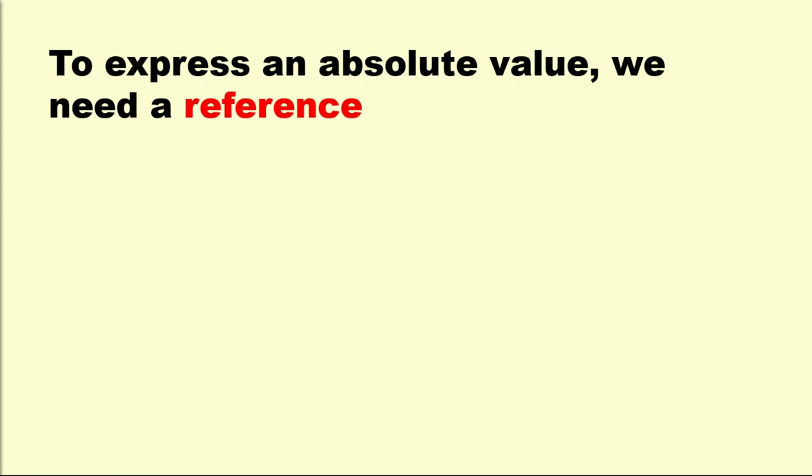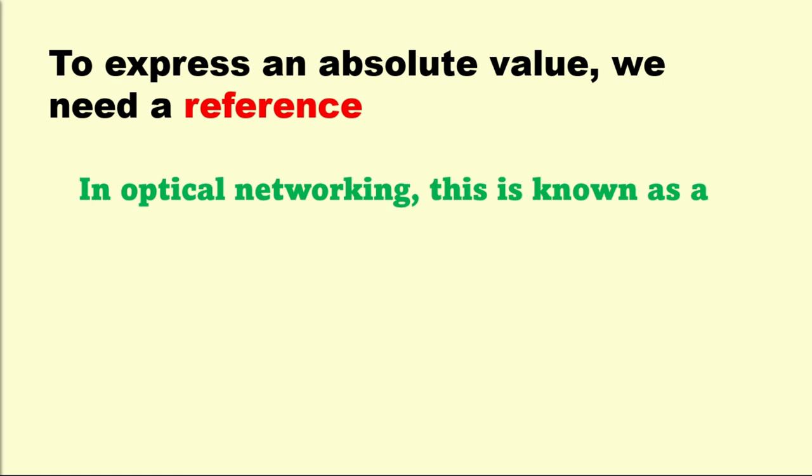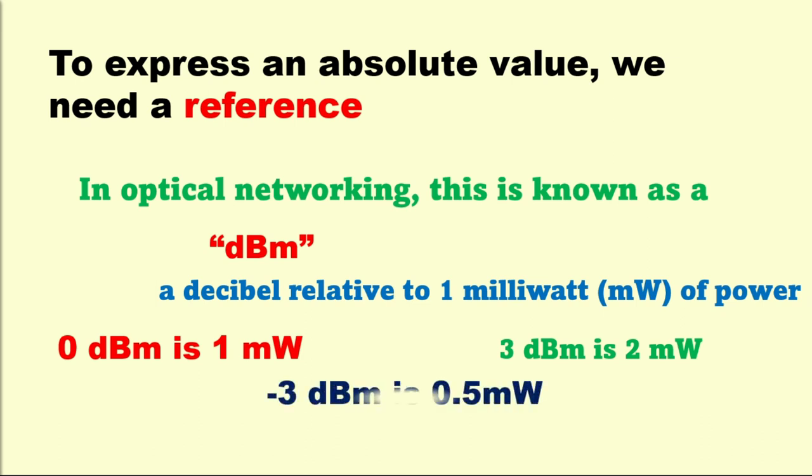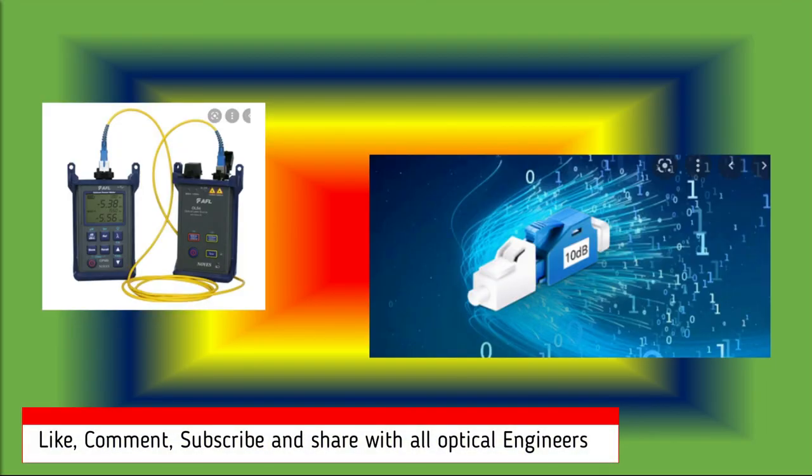To express an absolute value, we need a reference that we use for input and receiver power. In optical networking, this is known as a dBm. That is, a dB relative to 1 milliwatt of power. 0 dBm is 1 milliwatt. 3 dBm is 2 milliwatts. Minus 3 dBm is half a milliwatt. Based on same we measure the power and loss in network and use attenuator.